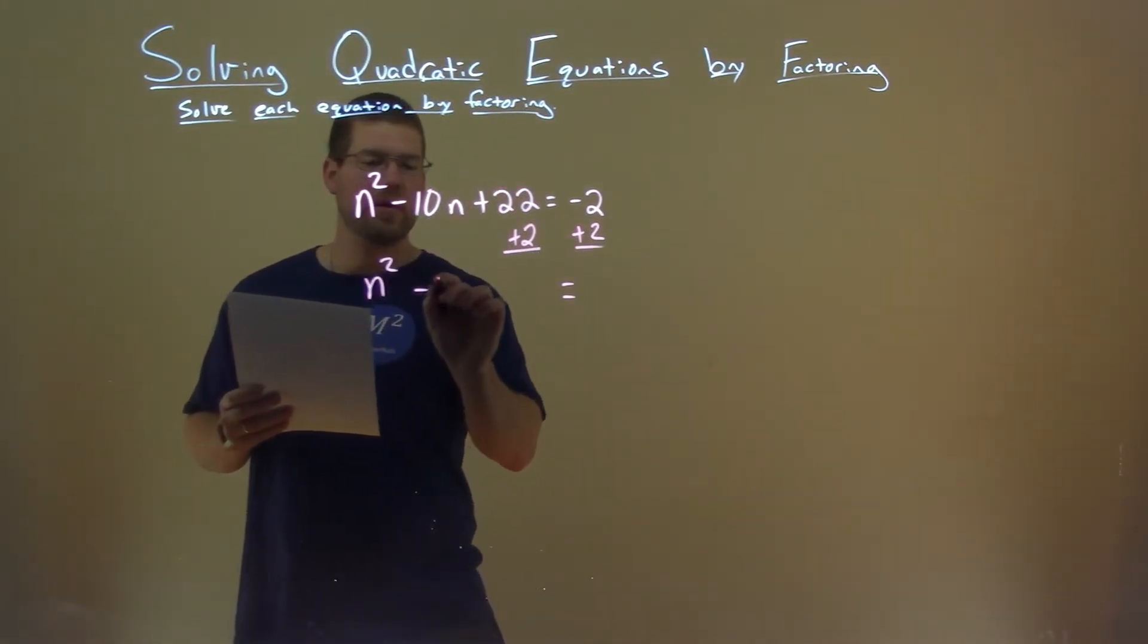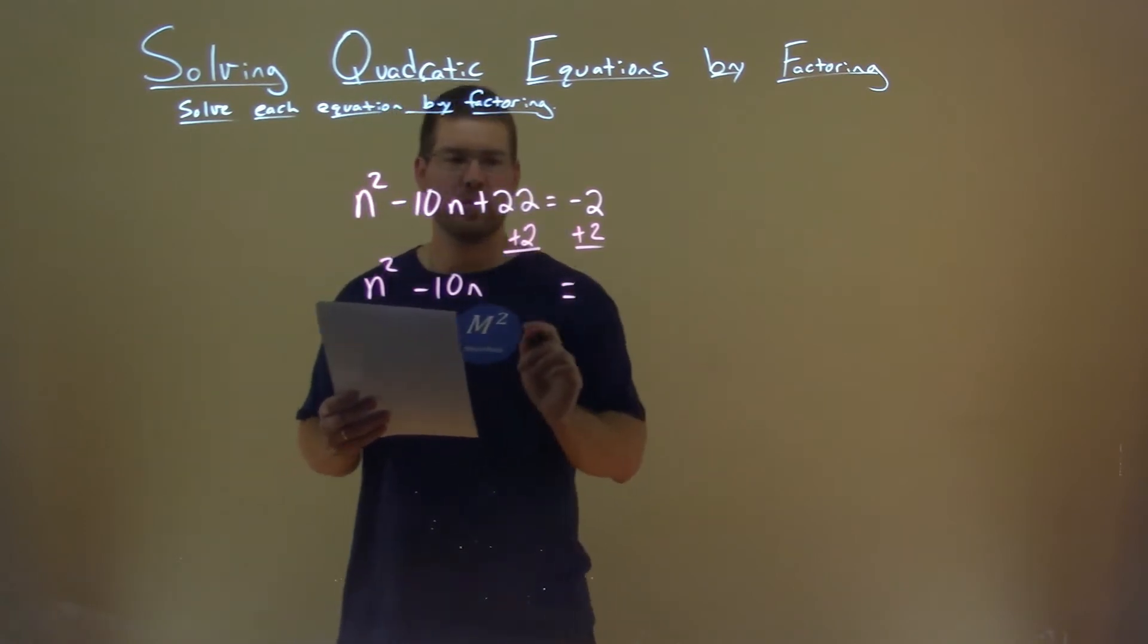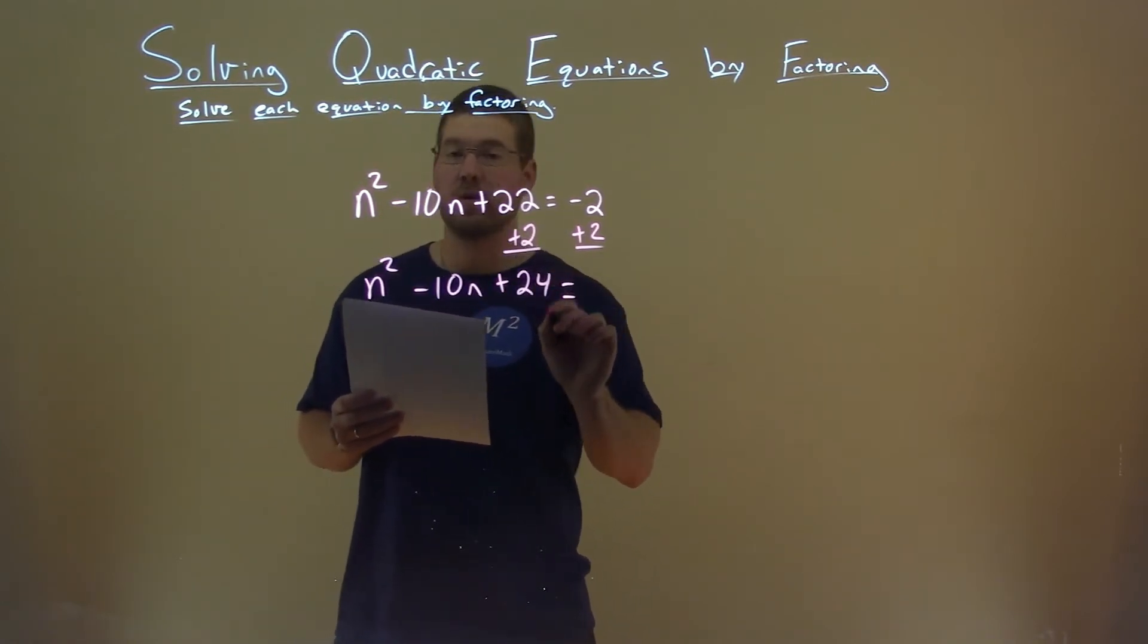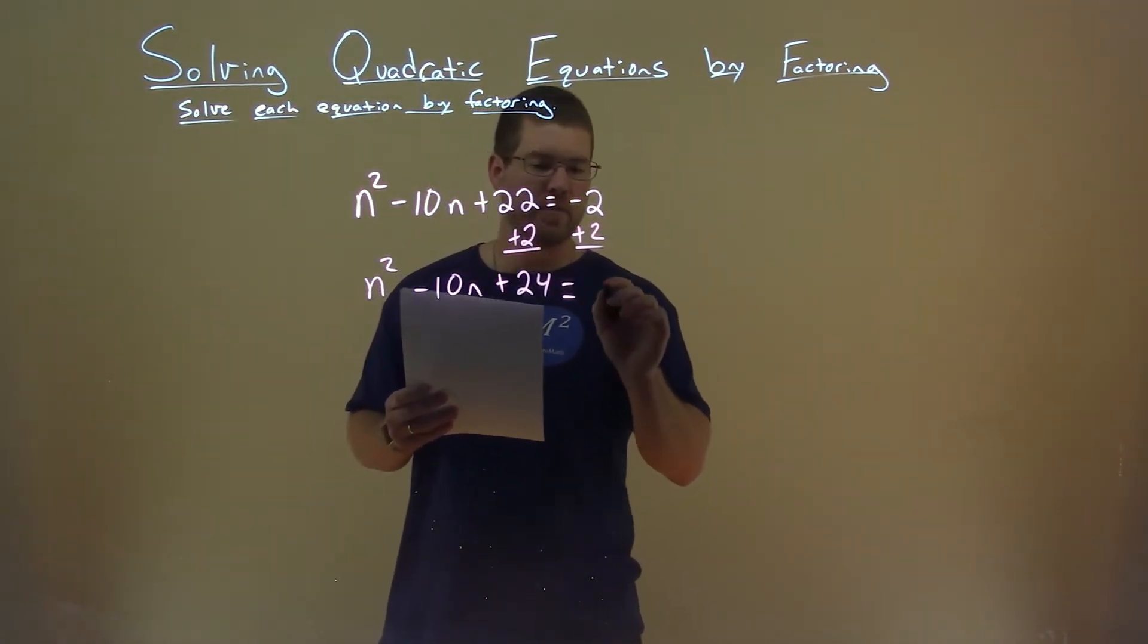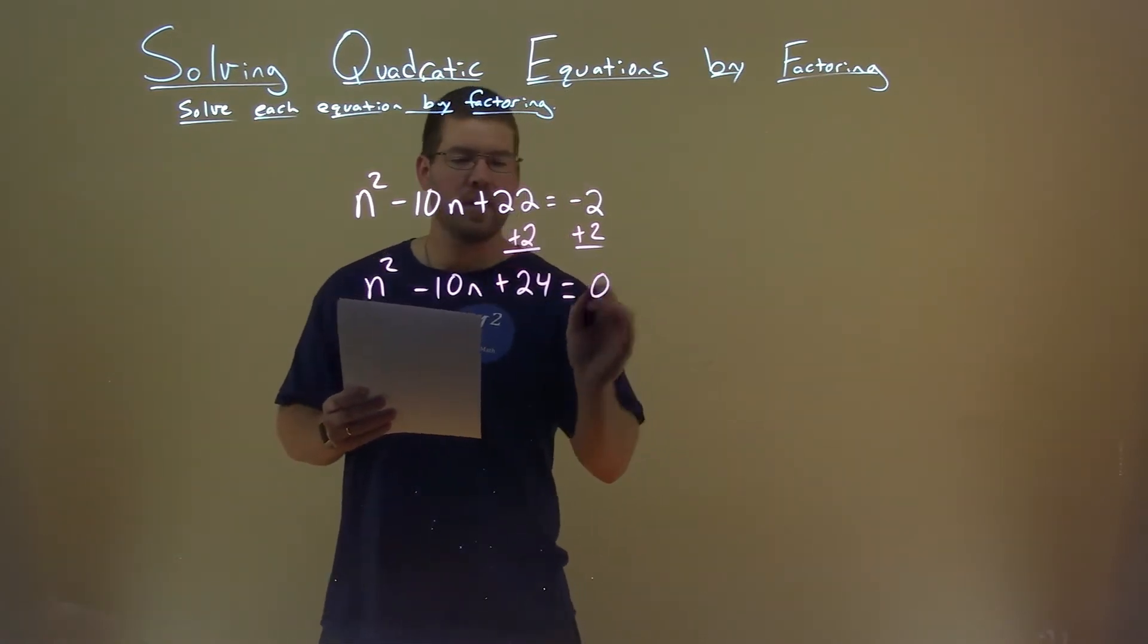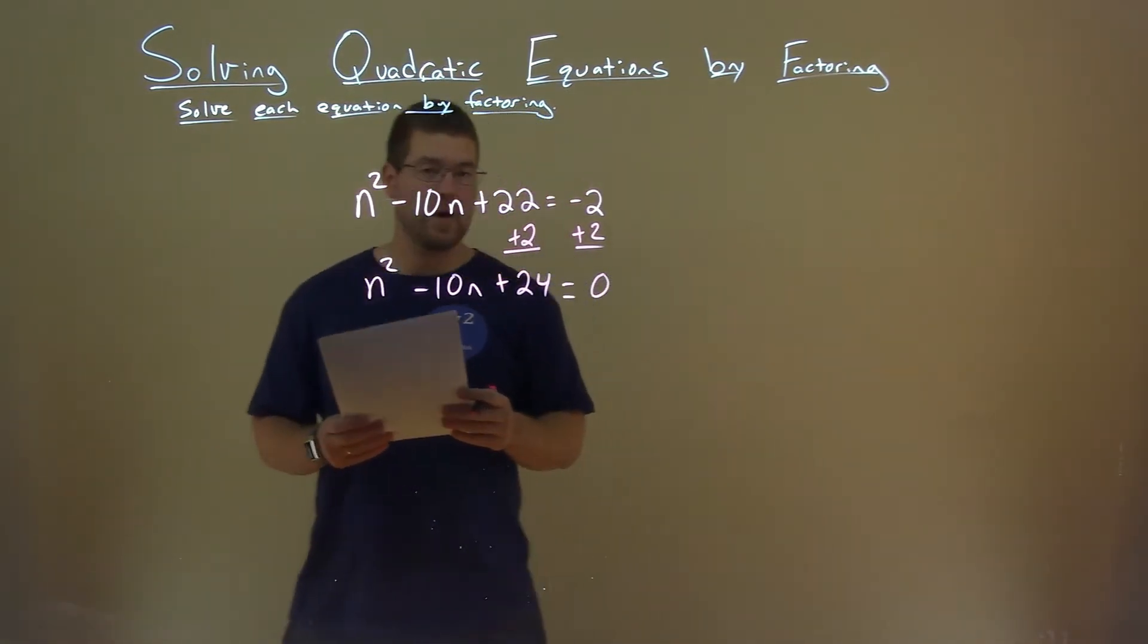The n squared comes down minus 10n and 22 plus 2 is 24. Negative 2 plus 2 is 0. So now we're equal to 0, it's time to factor.